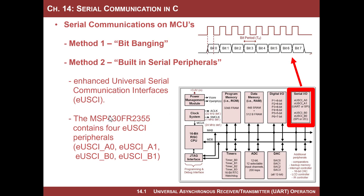Our specific MCU, the MSP430FR2355, actually has four separate eUSCIs — four serial peripherals. That's pretty powerful; you can set up four independent links. They're called A0, A1, B0, and B1, with eUSCI underscore before them. That's how you see these referred to in the datasheet.